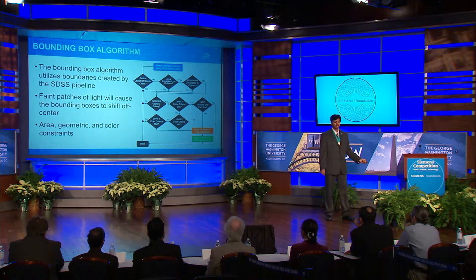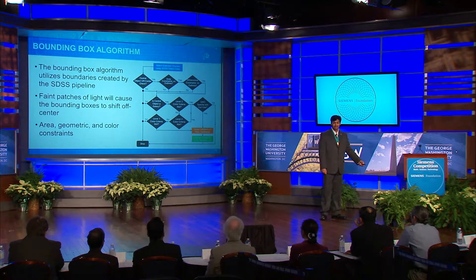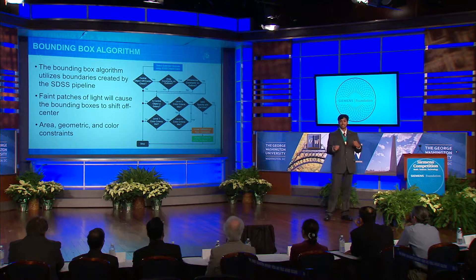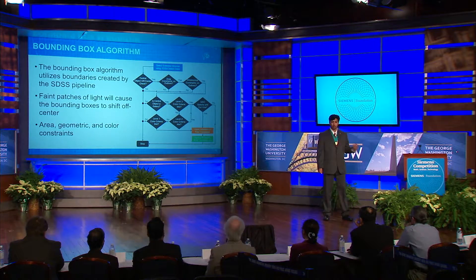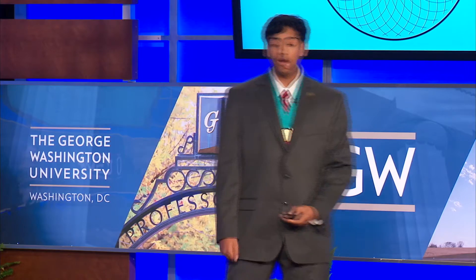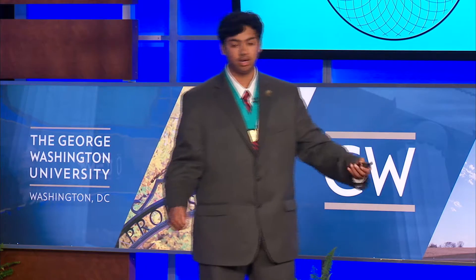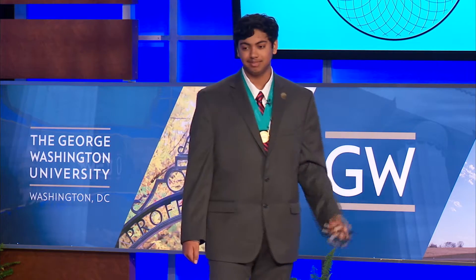Let's look at how the bounding box algorithm works. Most astronomical objects are brightest near the center, and their light goes out radially until it doesn't exceed that of the sky. SDSS bounding boxes are drawn at this boundary between foreground and background. If there's a faint patch of light near this boundary, it will cause the bounding box to shift off-center from the primary photometric object. However, this criterion alone isn't enough to identify ADGs, so I introduced area and geometric constraints, which helped reduce the number of false positives identified.